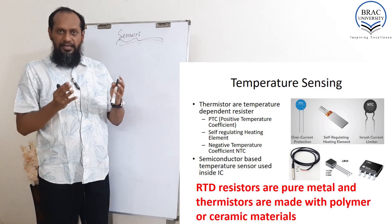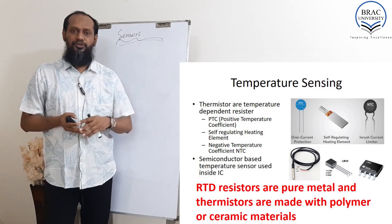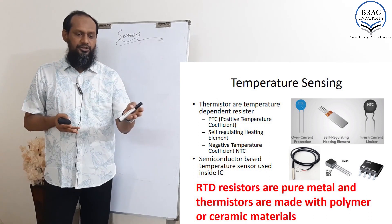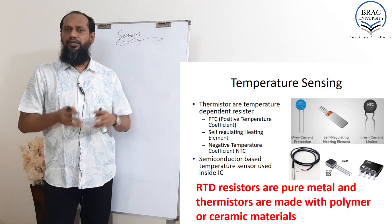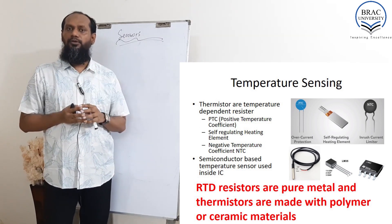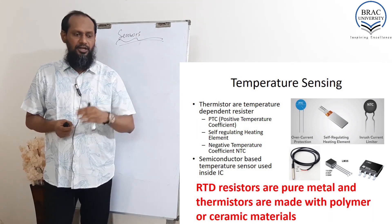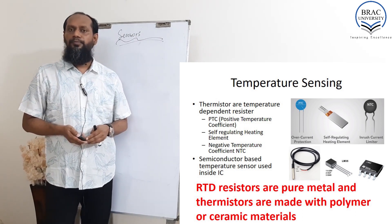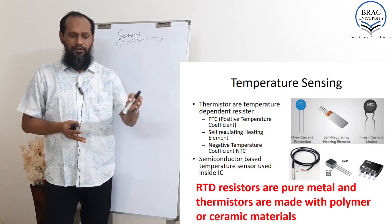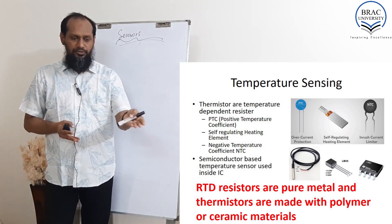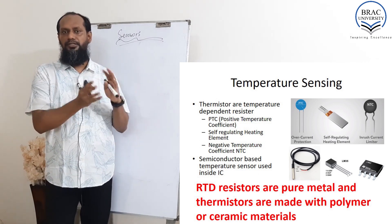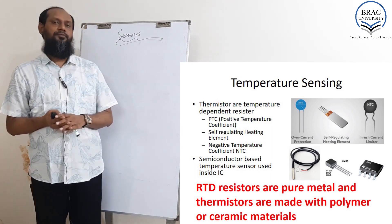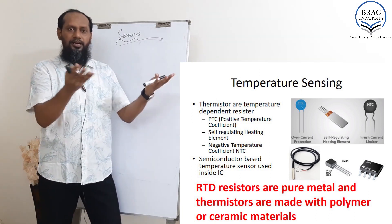Some people can get confused with RTD and thermistor. The small difference is: RTD resistors are pure metal, while thermistors are made with polymer or ceramic materials — that is the materialistic difference. RTD uses platinum, copper, nickel, or nickel-iron for sensing temperature, and for thermistors we use polymer and ceramic material. The main difference is the material used.